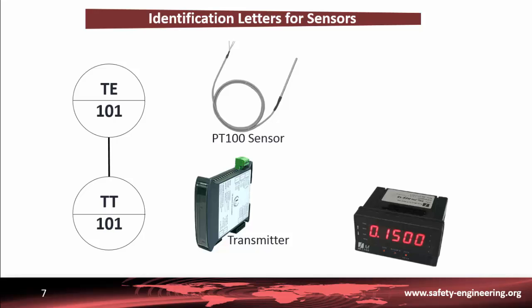Indicators may be as simple as a pressure gauge or more complex such as a digital readout device. The symbol associated with an indicator is the letter I. For example, PI means a pressure indicator not connected to a controller. FIT means a flow indicator with a transmitter — this kind of sensor could be connected to a controller.